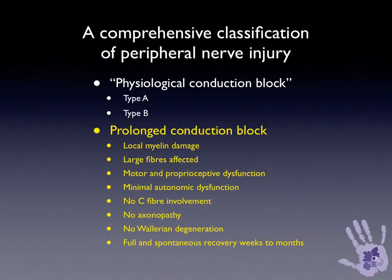Prolonged conduction block is when there is local segmental myelin damage to the nerve. This tends to affect the larger myelinated nerve fibres more than others, so motor and proprioceptive dysfunction can be seen together with fast pain response. There is minimal autonomic dysfunction and no C-fibre involvement. There is no degenerative axonopathy, and full spontaneous recovery can occur within weeks to months, so long as the myelin is able to repair itself — which takes between 10 and 12 weeks. This will only occur if the injuring agent is removed. If the injury persists, such as an expanding haematoma or compression from fracture fragments, then this prolonged conduction block may persist, and with continued pressure there may be apoptosis and cell death, resulting in a higher level of nerve injury.